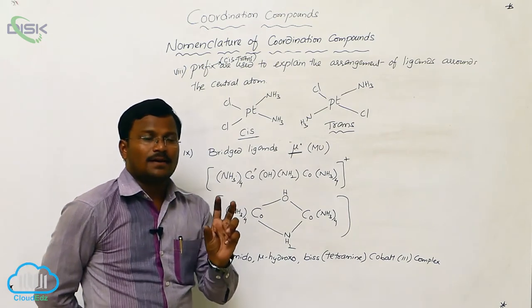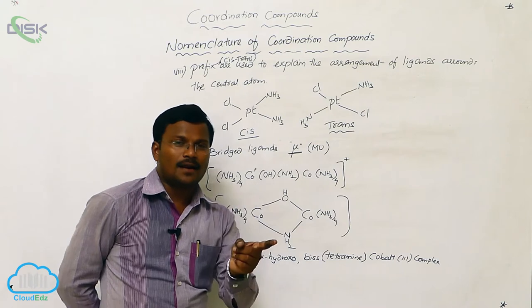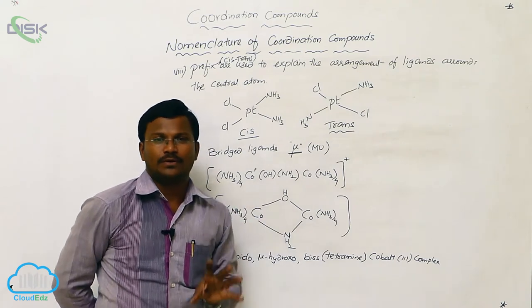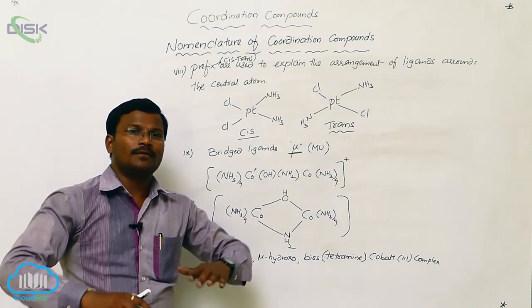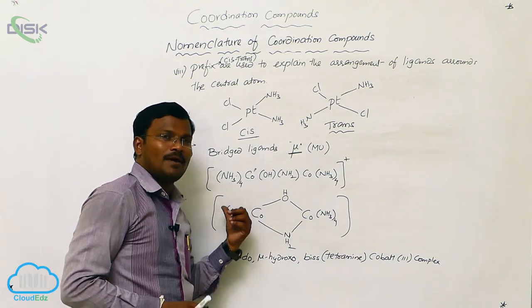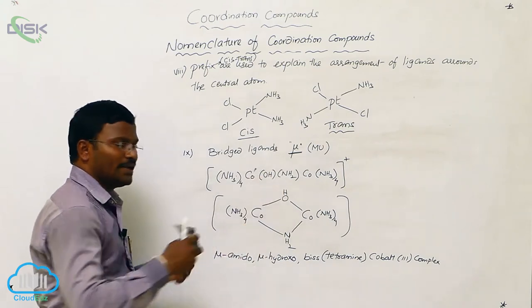Third one, prefixes like tri, di, tetra, penta are used in case one type of ligands are present in more number which are connected to the same metal atom present in the same coordination sphere.